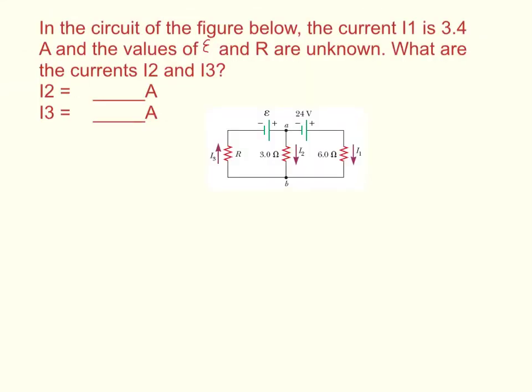In the circuit of the figure below, the current I1 is 3.4 amps, and the values of E and R are unknown. What are the currents I2 and I3?